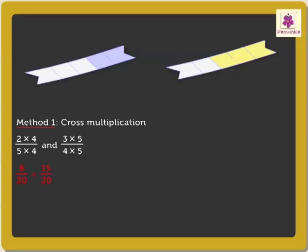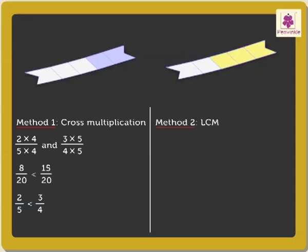Look, we got like fractions. Now compare them. Here eight upon twenty is less than fifteen upon twenty, so we can say that two-fifth is less than three-fourth. We can also compare these fractions by taking the LCM of the denominators.